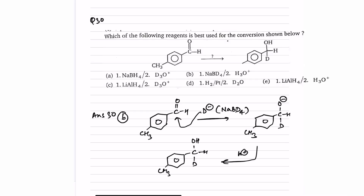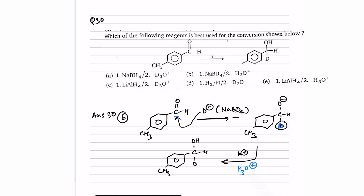Question number 30: convert an aldehyde to an alcohol where deuterium is placed on the carbon. The reducing agent must supply deuterium (D minus). NaBD4 gives D minus, which attacks the carbonyl carbon forming O minus and D on carbon. Then H3O+ (option B) provides H+ to convert O minus to OH, giving the desired deuterium-labeled alcohol. The answer is option B.